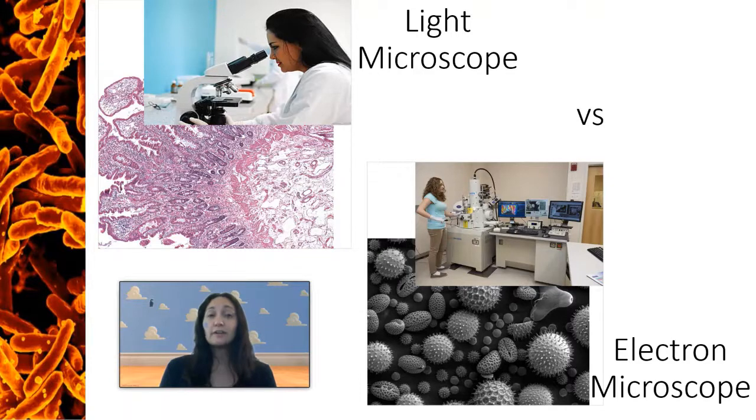Now that you have a general understanding of how a light microscope works, we'll take a look at how an electron microscope differs from a light microscope.